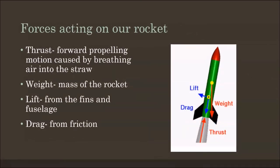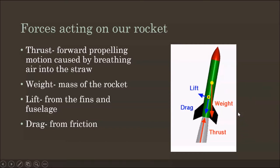Before we get started making our straw rocket, let's talk about the forces that are going to act on any rocket. First, there's going to be thrust — for this straw rocket, that thrust is provided as we exhale into our straw, and that's going to move our rocket forward. There's also going to be weight, acted upon by gravity, pulling our rocket perpendicular — at a 90-degree angle — down towards the ground. There will also be lift, an aerodynamic force pushing our rocket upward due to the fins, and there will also be drag from friction, from the fins, air resistance, and friction between our rocket and the straw.